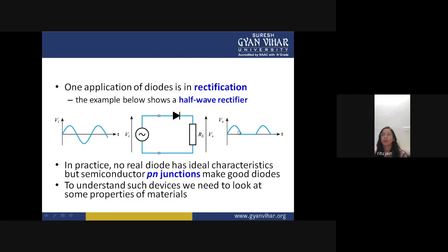For the positive half-wave you get output voltage. This is your input voltage, this is the rectifier, and this is the output voltage. When the negative waveform passes through the circuit, the anode becomes negative and the bar terminal becomes positive, so the diode is in reverse bias and will not conduct. There is no output for the negative half. This is your half-wave rectifier.